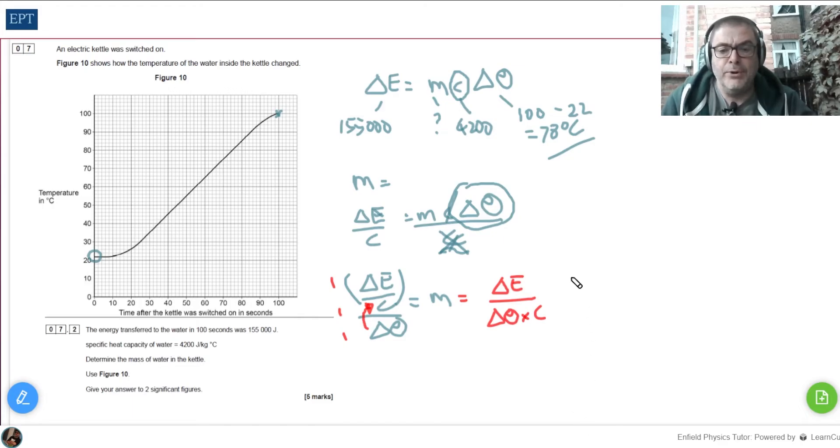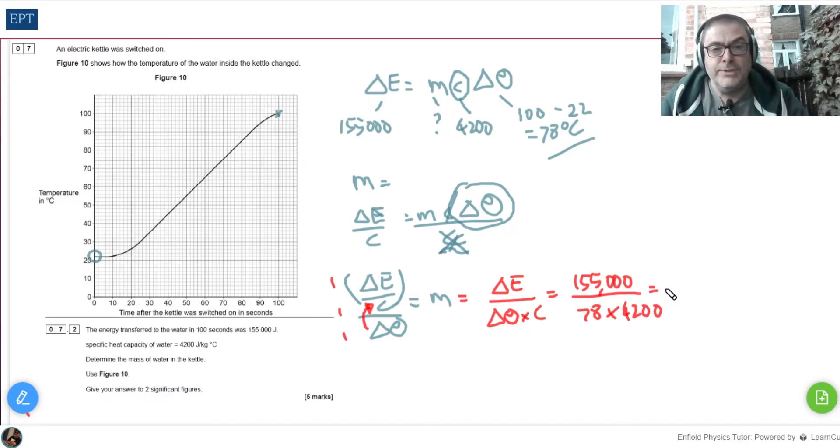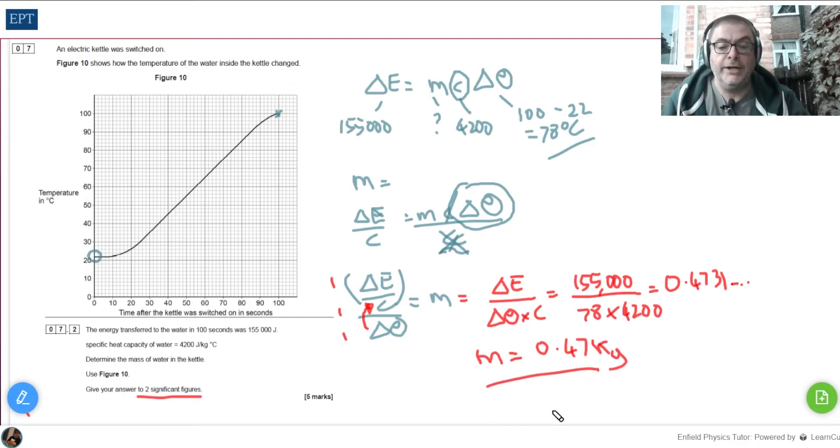Right, so now we can put in the numbers. 15,500 over 78 times 4,200. When you type this jolly lot into your calculator, you should get 0.4731 blah blah blah, just goes on and on. Of course, you will know that the question asked for two significant figures, therefore that means that the mass equals 0.47, don't forget some units, kilograms, ka-ching, and that's the answer.